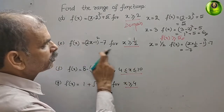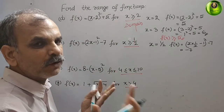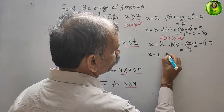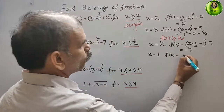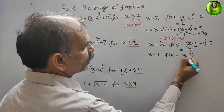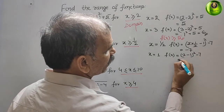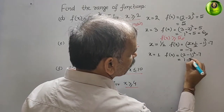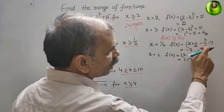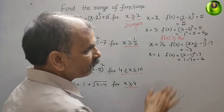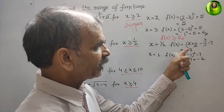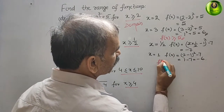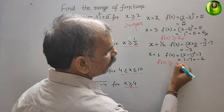Next, suppose we take x = 1, which is greater than 1/2. So f(1) = (2×1 - 1)² - 7 = (2-1)² - 7 = 1² - 7 = 1 - 7 = -6. Comparing the two values, the value is increasing: -7 then -6. Therefore f(x) ≥ -7 is your range.